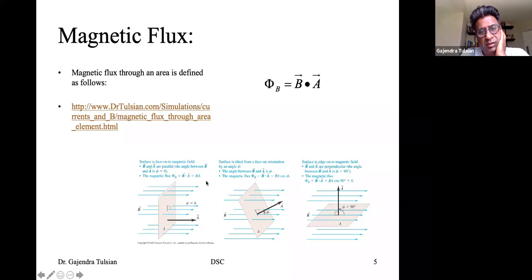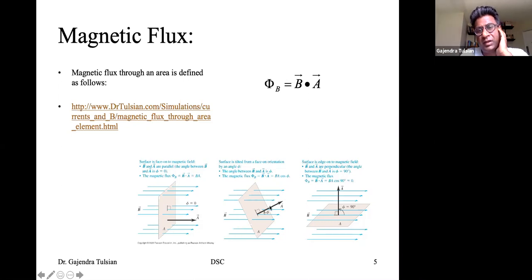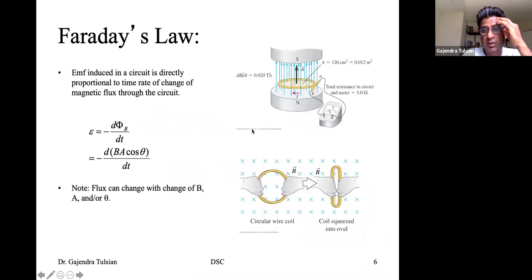Here is a uniform magnetic field with this area and its area vector. Right now, maximum flux is threading this area. If the area were oriented perpendicular to the field, there are no field lines going through the area and the flux is zero. At an intermediate angle, the effective area perpendicular to the field is smaller, so fewer field lines thread the area. The flux is B times A times cosine theta.